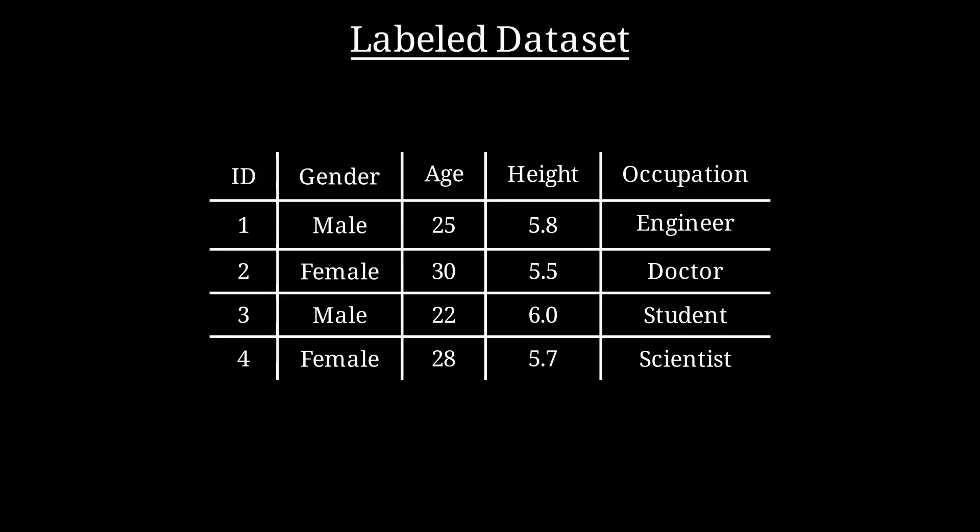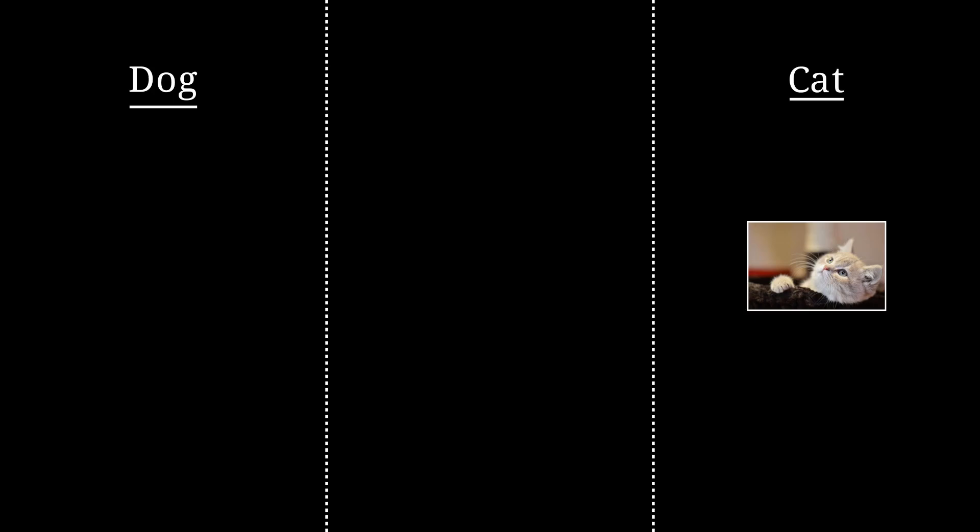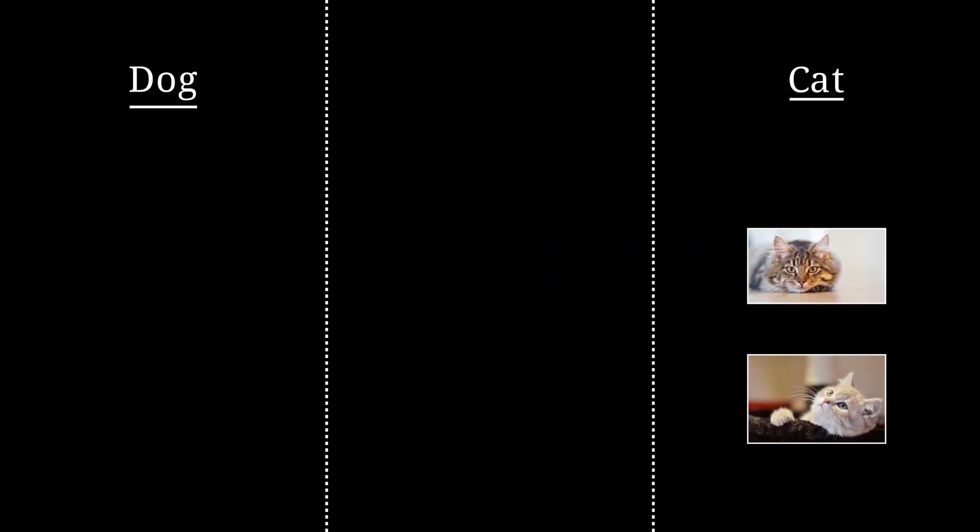Having a perfectly labeled dataset is actually quite rare, and creating one from scratch can be extremely expensive. Imagine a human manually labeling every data point, thousands, maybe even millions of images. That takes an enormous amount of time and resources.